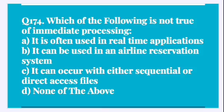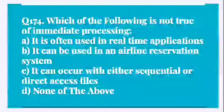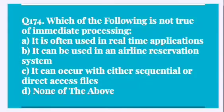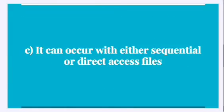Question number 174: Which of the following is not true of immediate processing? Options are: A, it is often used in real-time applications; B, it can be used in an airline reservation system; C, it can occur with either sequential or direct access files; D, none of the above. Correct answer is option C, that is it can occur with either sequential or direct access files.